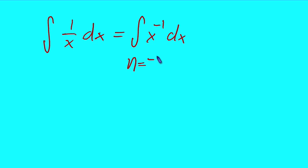So, our n equals negative 1 and our n plus 1 equals 0. So, if we plug that into our formula here, we get x to the 0 over 0 plus c.